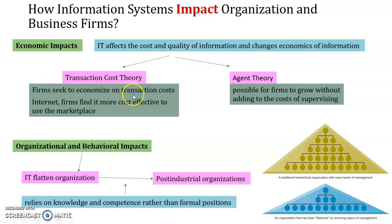Transaction cost theory — a firm seeks to economize on transaction costs. Internet firms find it more cost effective to use the marketplace. Why do transactions manually when you can use the internet? It reduces costs like fuel, toll, parking, energy, and time — these are all transaction costs. For agency theory, it is possible for firms to grow without adding to the cost of supervising. Rather than having many supervisory ranks, management can be more direct, reducing the number of levels in the company.